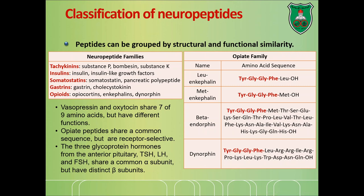Looking at specific neuropeptide examples: vasopressin and oxytocin, which we discussed in general biochemistry, are each made of nine amino acids and share seven of them, yet have totally different functions. The opioid family shares a common sequence but the rest differs, as do their receptors. Then we have three large hormones — thyroid stimulating hormone, luteinizing hormone, and follicle stimulating hormone — which share the same alpha subunit but have a different beta chain.